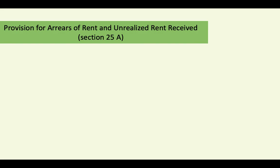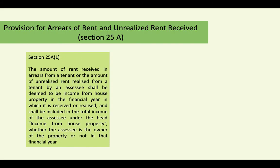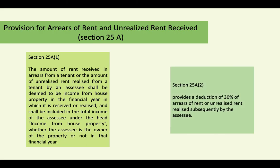Provision for arrears of rent and unrealized rent received under Section 25A — this is treated as deemed income. The amount of rent received as arrears from a tenant, or an amount of unrealized rent realized from a tenant by an assessee, shall be treated as deemed income and will be taxable in the financial year in which it is received or realized. It is eligible for a deduction under Section 25A(2) of 30% of such amount realized; the balance is the taxable amount.